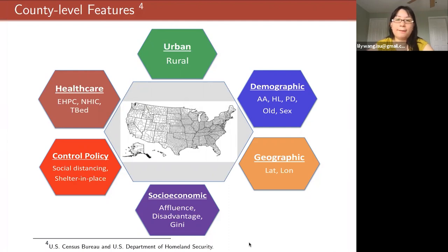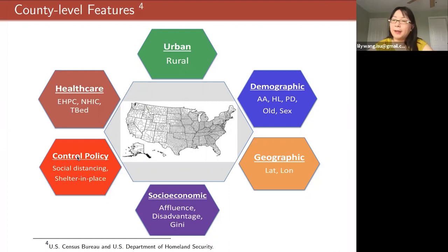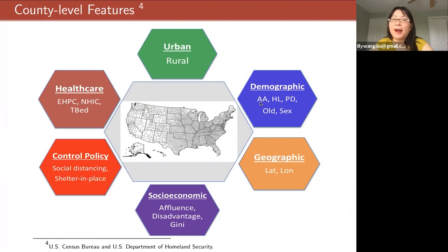For example, in the control policy group we included government declarations such as social distancing and shelter-in-place orders. In the demographic information we included minority information such as the percentage of African American, the percentage of Hispanic and Latino, as well as population density, age distribution, and male-to-female ratio.